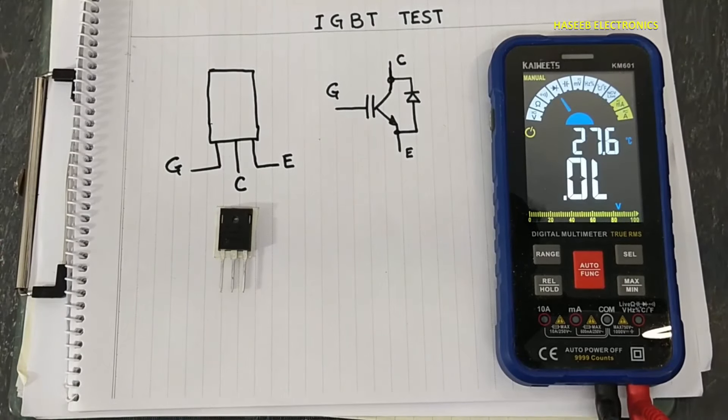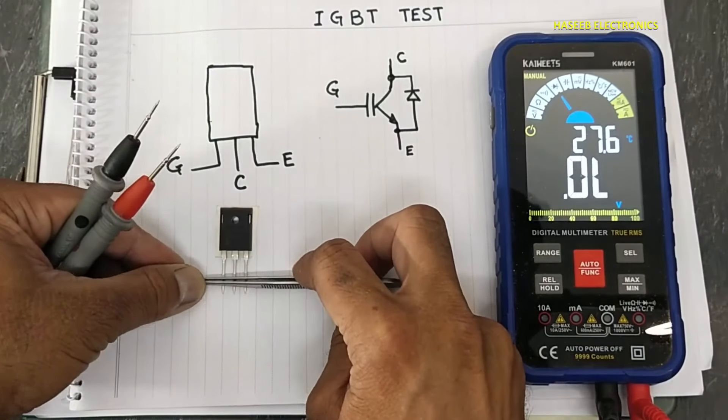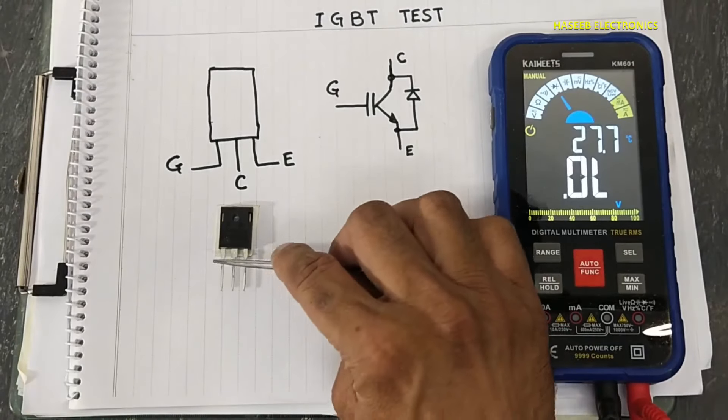First of all, we will make a jumper to these three leads to discharge its gate with tweezers and screwdriver. Just touch these three wires together.